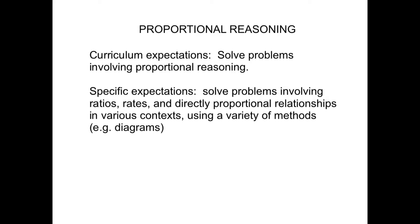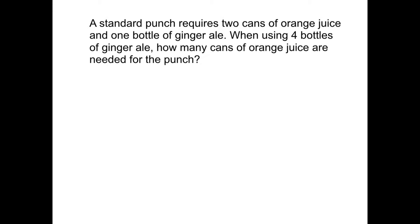Today we're going to be looking at a question that involves proportional reasoning. There are many different ways that we can solve this problem, but in this video we're going to be solving it using diagrams. The question says that a standard punch requires two cans of orange juice and one bottle of ginger ale. When using four bottles of ginger ale, how many cans of orange juice are needed for the punch?